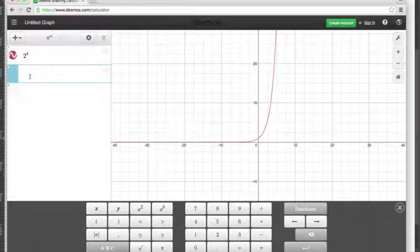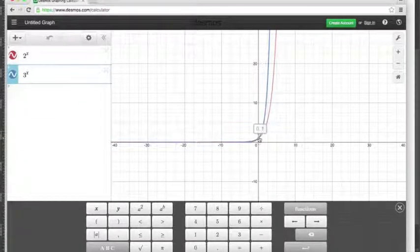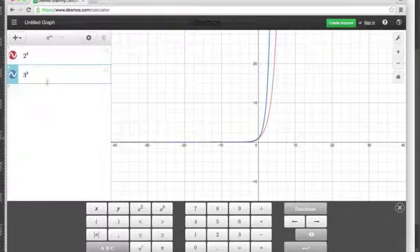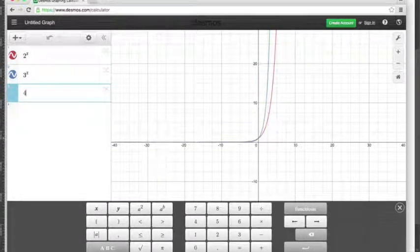Let's look at another, say three to the X. Again it crosses through the point zero one, so the three is even steeper than the two. If we were to look at four to the X we would see the same result, the four would be even steeper than three.